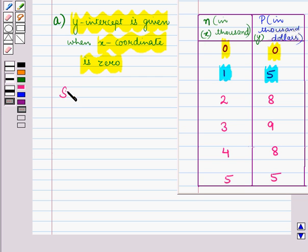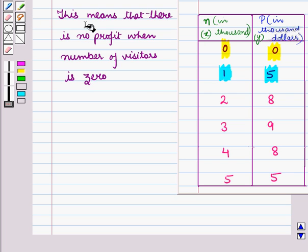So, the y-intercept is given by the point (0, 0). This means that there is no profit when number of visitors is 0.